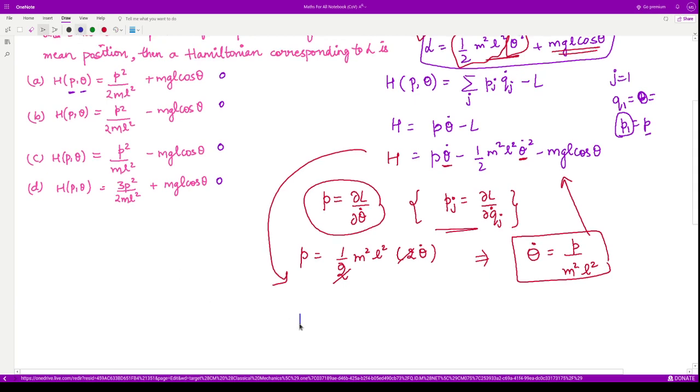So let us see what we get from here. We have h is equal to p times p divided by m square l square and minus half m square l square and the value of theta dot square. So p upon m square l square whole squared minus m g l cos of theta.